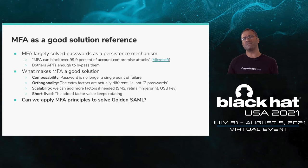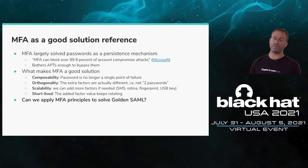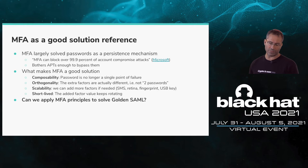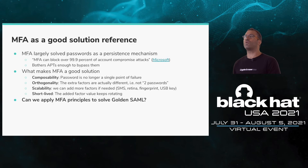As lazy engineers — and the lazy engineer is a good engineer — when facing a new problem, we try to find a good reference solution that works. As we saw earlier, MFA largely solved passwords as a persistence mechanism. Microsoft Research says it solves 99.9% of account compromise with passwords. Or we can look at APT behavior and see whether they're bothered enough with MFA to find ways to bypass it — for example, Golden SAML.